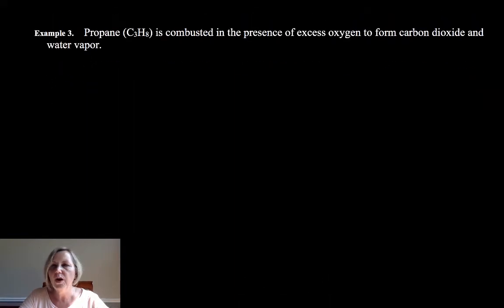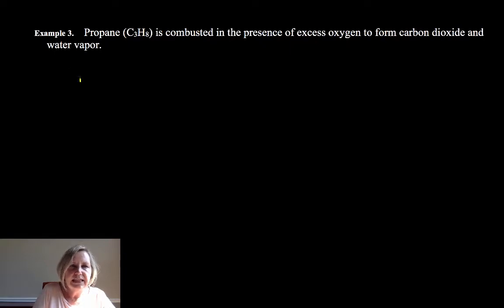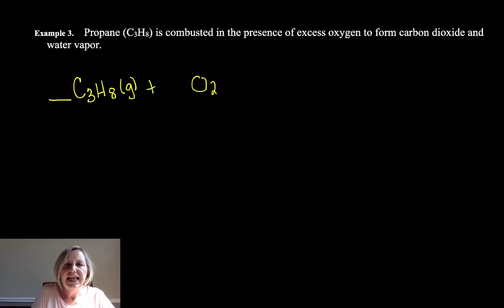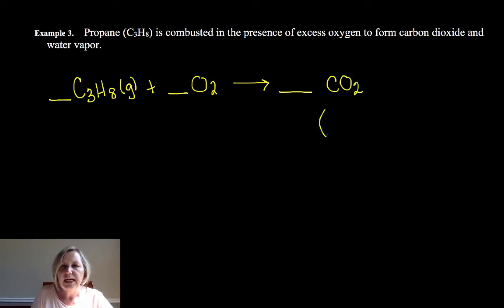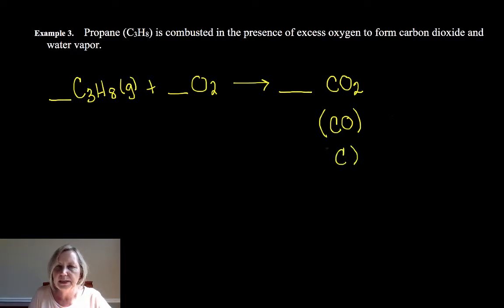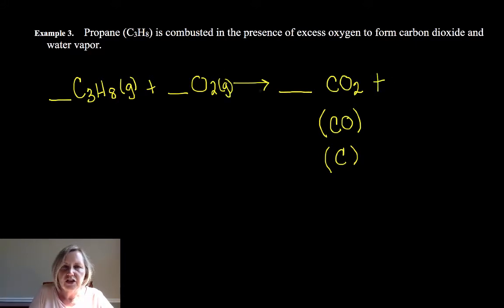One more example: propane is combusted in the presence of excess oxygen. To combust means to burn. Propane is a gas. Complete combustion forms CO₂ — if you're IB, pay close attention to that. Incomplete combustion forms carbon monoxide or maybe some pure carbon, some soot. So be careful of the wording. Oxygen is a gas, carbon dioxide is a gas, and water vapor.